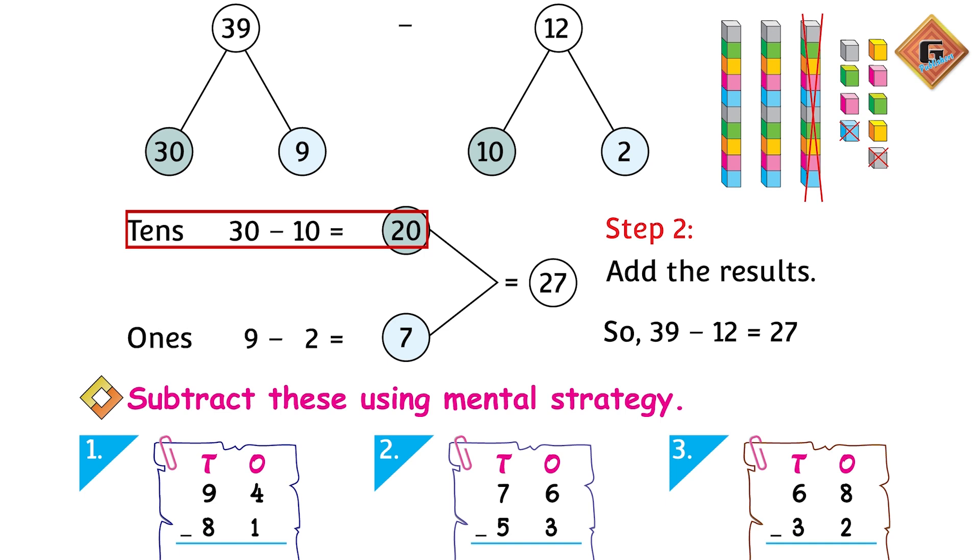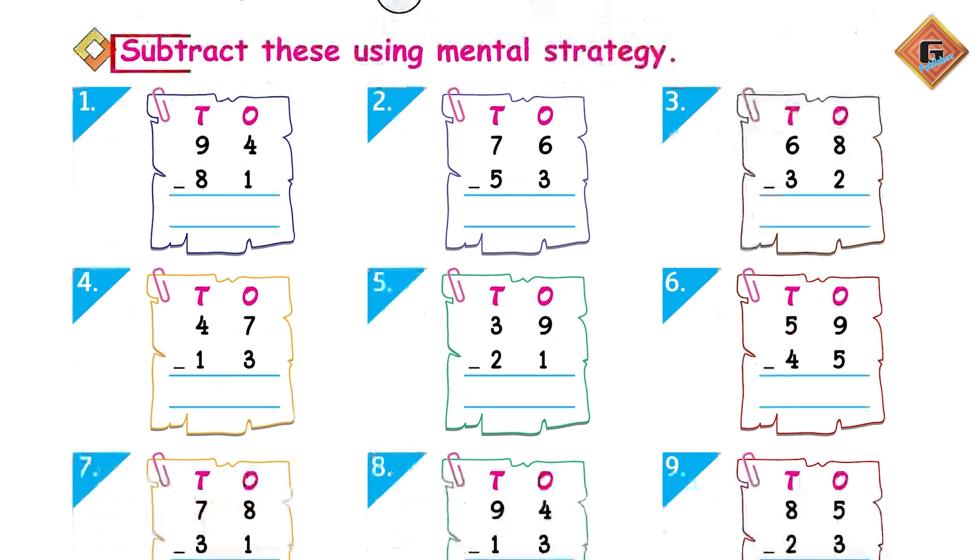Ham karenge. There are 30 and 10. 30 minus 10 equals 20, very good. And ones: 9 minus 2 equals 7. So our answer is 27. Excellent! Now subtract these